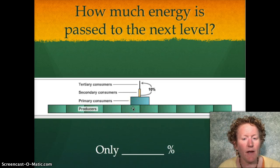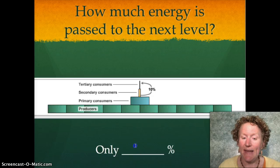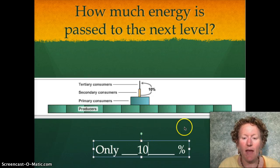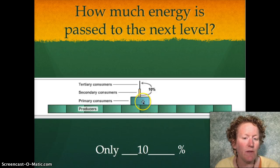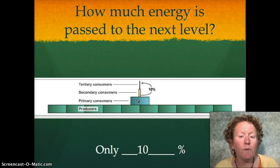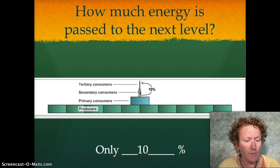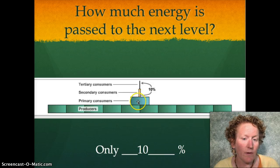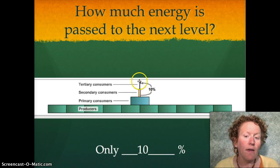They pass their energy on only about 10%. A big whopping 10% gets passed from the producers to the primary consumers — these are the organisms that eat plants, like caterpillars or birds eating seeds. Those organisms pass on only 10% of their energy to the secondary consumers. So a robin comes along and eats the worm — that's a secondary consumer. And that robin, if it got eaten by a hawk, would only pass on 10% of its energy.